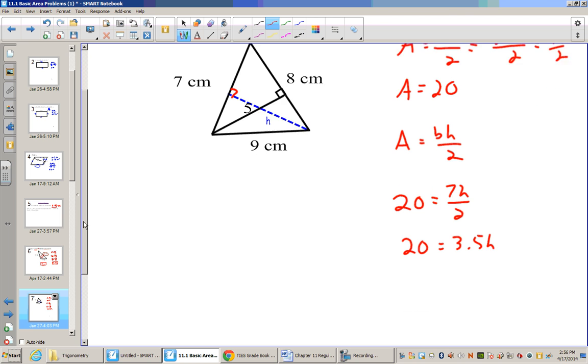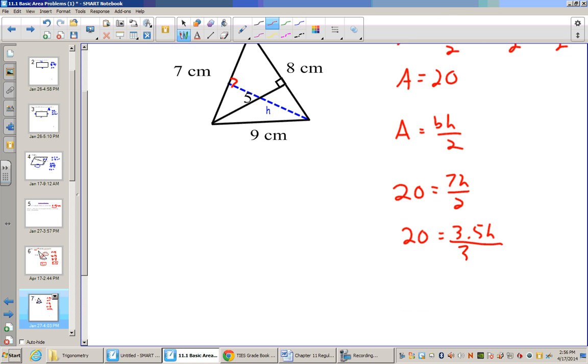Now 7 divided by 2 is 3.5. Now when I divide 3.5 on both sides, 20 divided by 3.5, I have to get on my calculator for that one, 5.714. So let's just say about 5.7. Roughly 5.7 is our height.